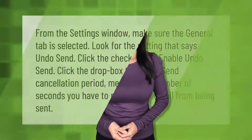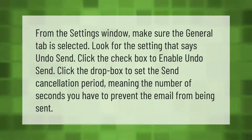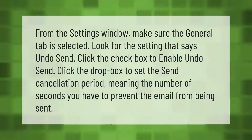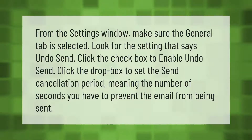From the Settings window, make sure the General tab is selected. Look for the setting that says Undo Send and click the checkbox to enable it. Click the drop box to set the send cancellation period — meaning the number of seconds you have to prevent the email from being sent.